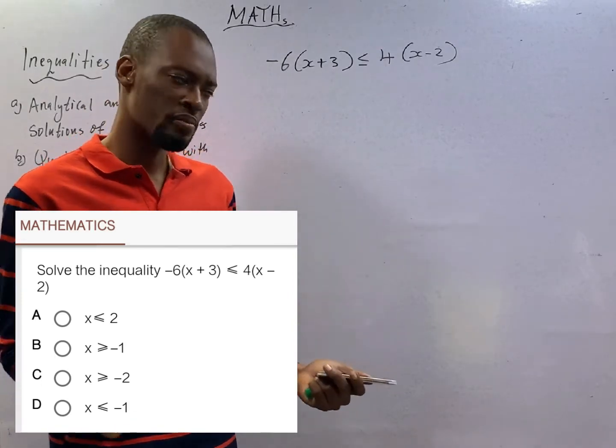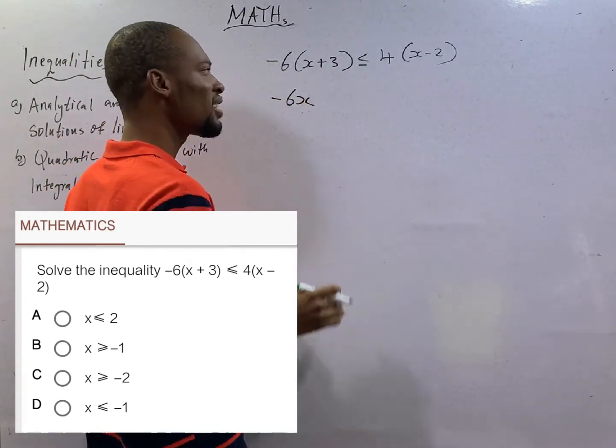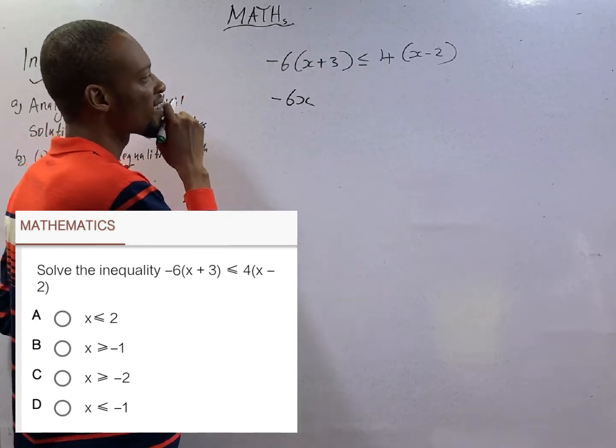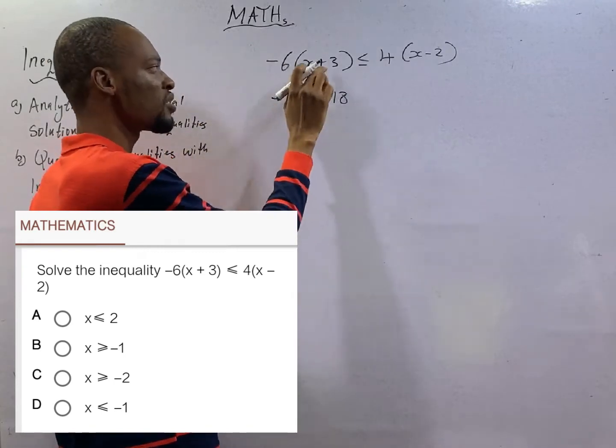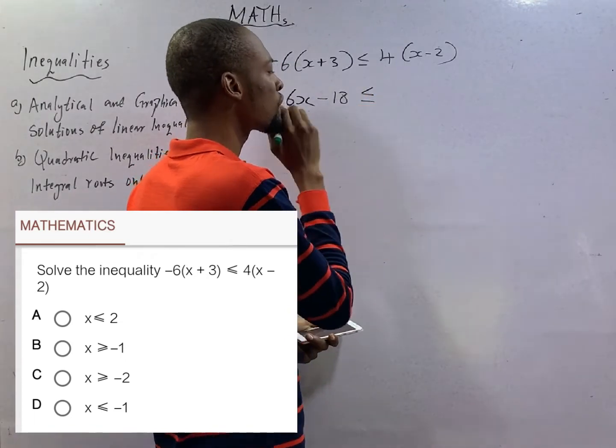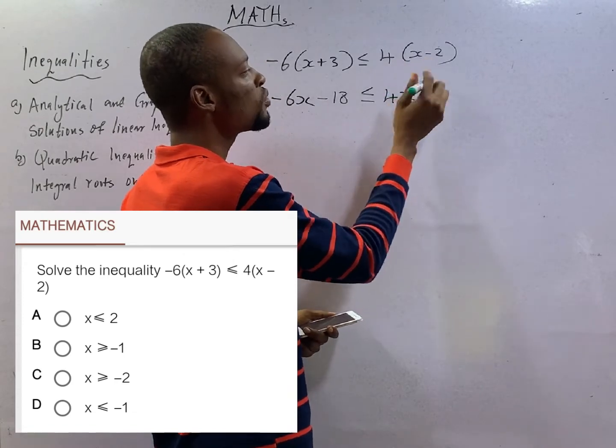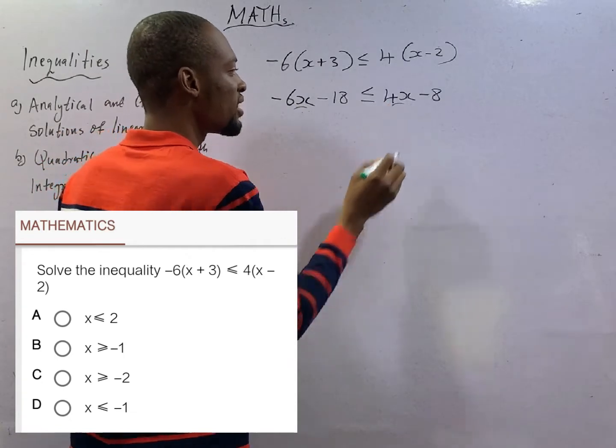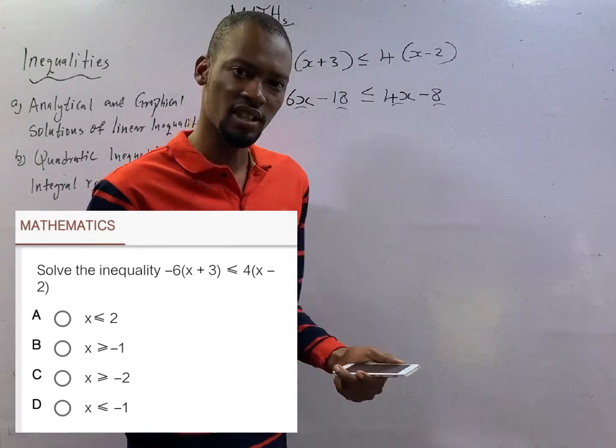This isn't new to us. Because -6 times x will obviously give you -6x. And -6 times +3, that is -18. Minus times plus, minus will always win. Look out. This is less than or equal. 4 times x is 4x. 4 times -2, that is -8. We can see x here and we can see x here. We can see a constant here and we can see a constant here. So our mind should tell us to collect like things.